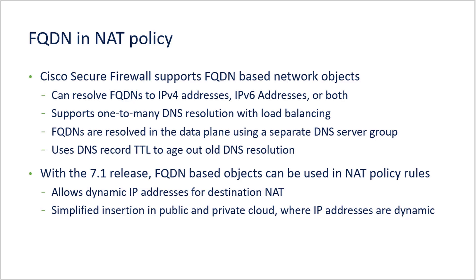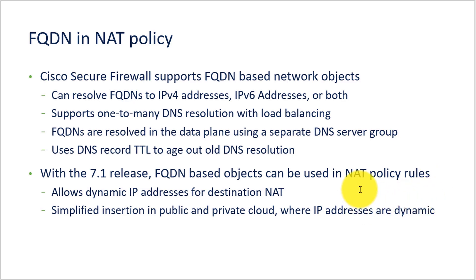The FQDN NAT can change destination addresses using the FQDN response from an internal DNS server. FQDN names can be included in the NAT policy for enhanced usability. It also allows for a simplified firewall insertion in the public and private cloud. Currently, we support it for both IPv4 and IPv6. The main benefit it provides is having dynamic IPs for destination NAT and helps with one-to-many DNS resolution using a load balancer.